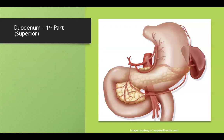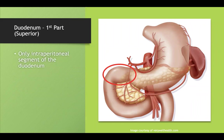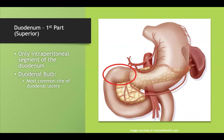The first portion of the duodenum is the only intraperitoneal segment, referred to as the duodenal bulb — it kind of looks like a light bulb. This is the site of duodenal ulcers. If you ever see ulcers past this region, you should consider Zollinger-Ellison syndrome, because all of that gastric acid should have been neutralized by bicarb and ulcers should not be forming there.